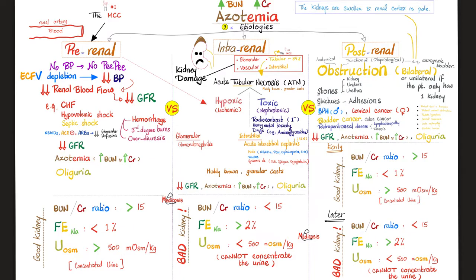Post-renal azotemia is an obstruction after the kidney — a problem in the outflow of urine. For this to cause renal failure, both sides must be affected; it has to be bilateral. A stone only in the right ureter won't cause renal failure if the left kidney is fine. Causes include stones, strictures or adhesions in the ureters or urethra, cervical cancer in females, benign prostatic hyperplasia in males, bladder cancer, and retroperitoneal disease such as retroperitoneal lymphadenopathy or retroperitoneal fibrosis.